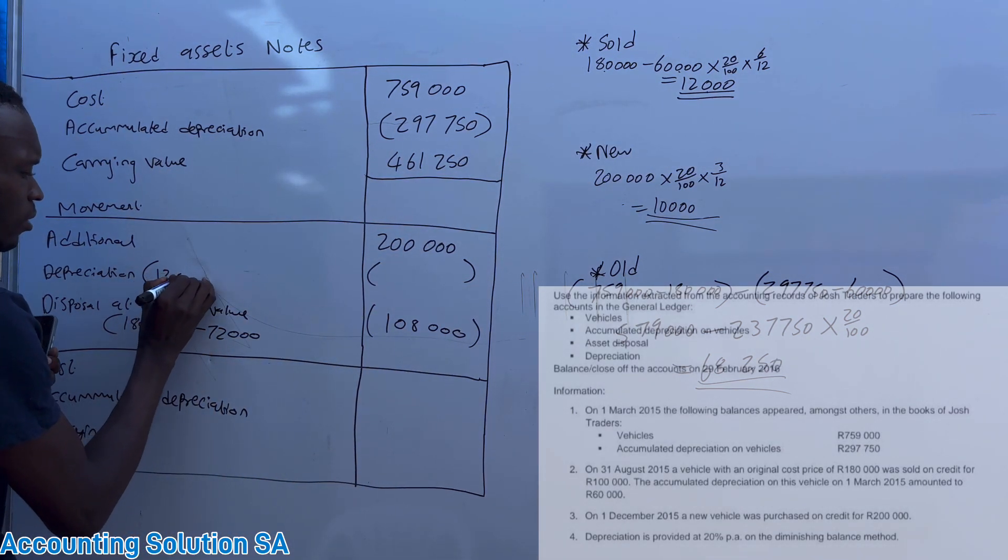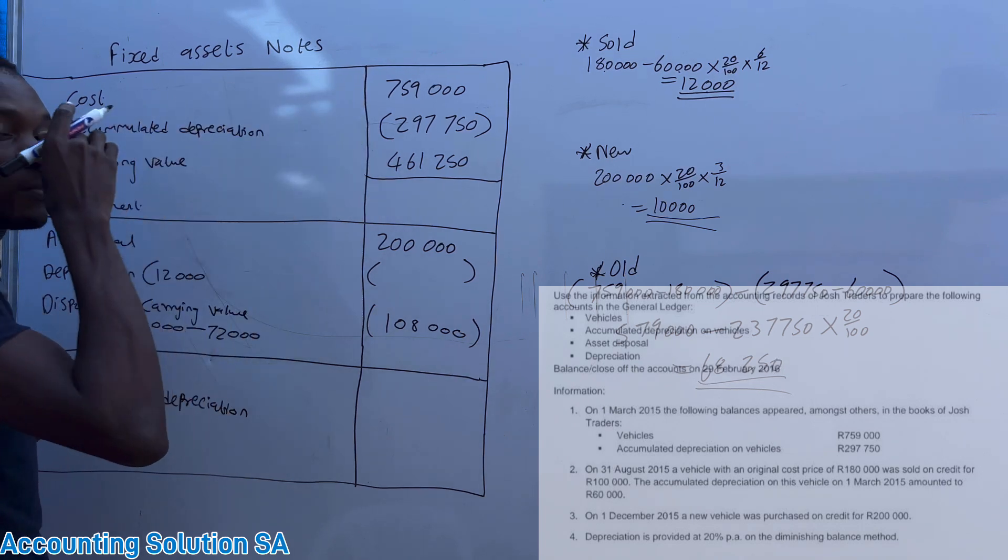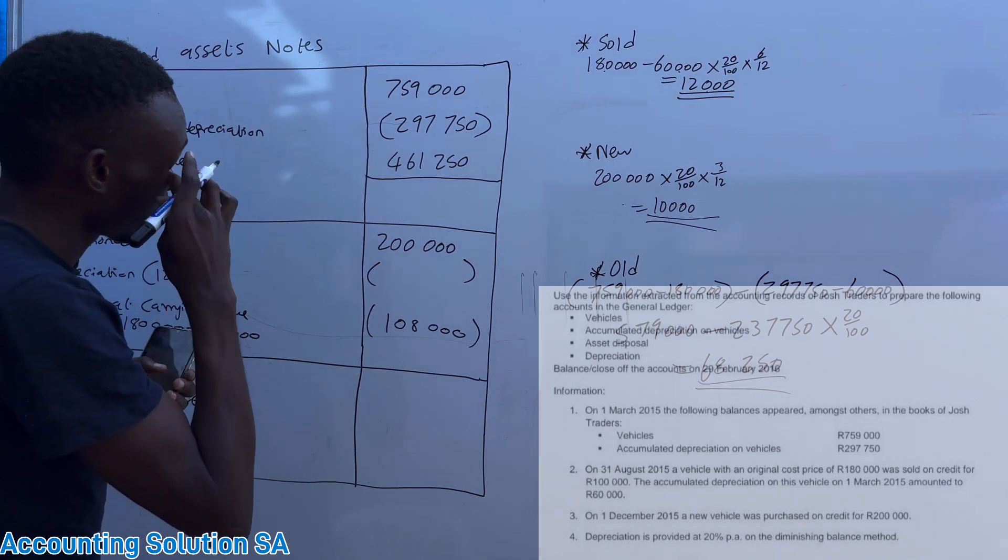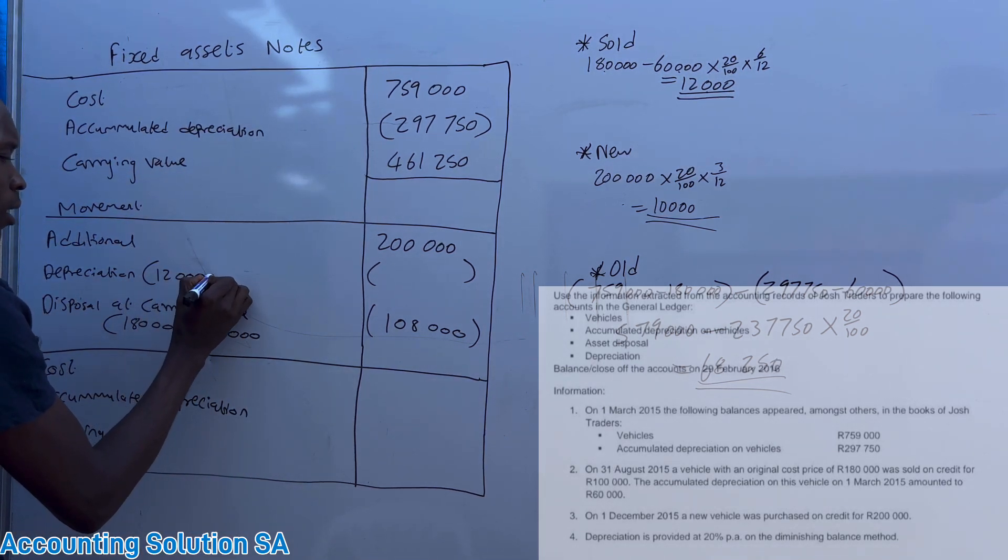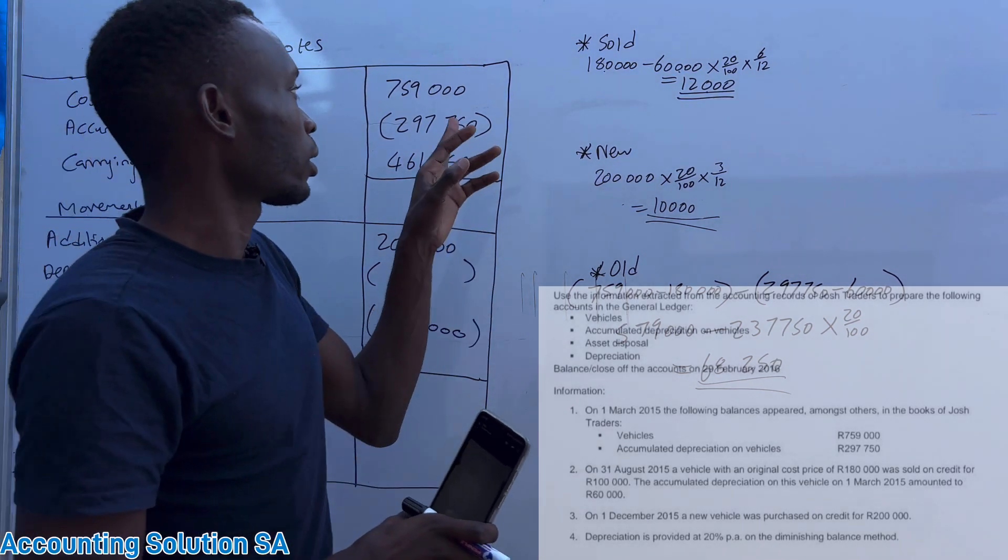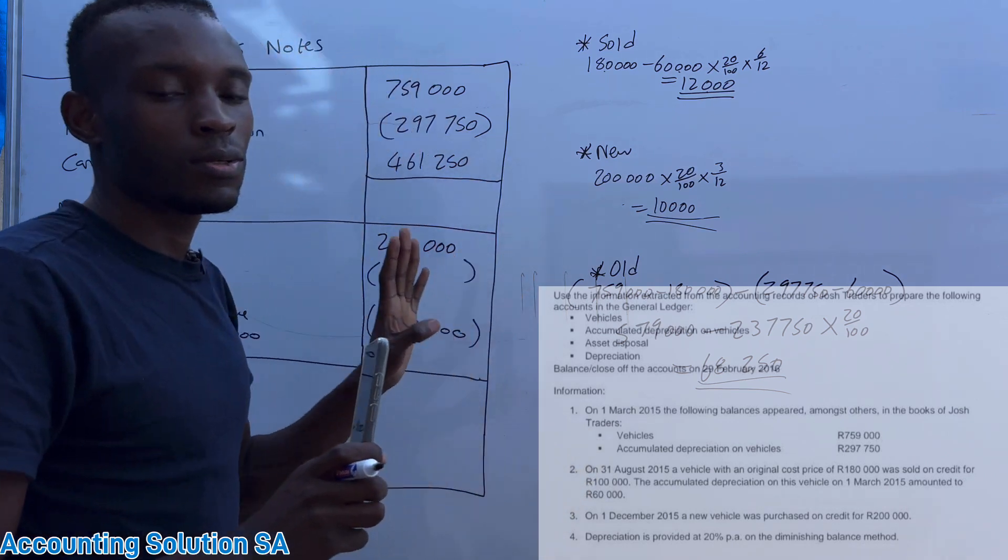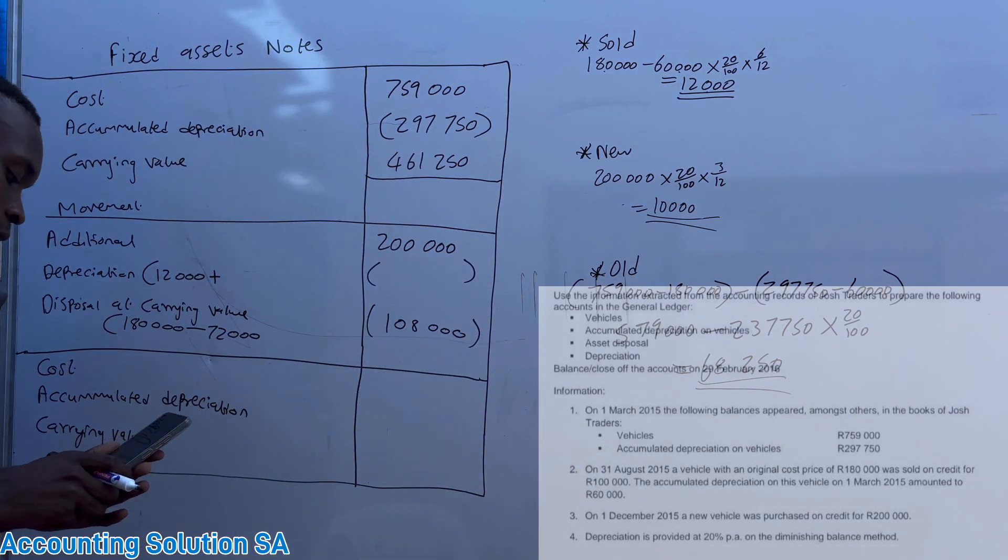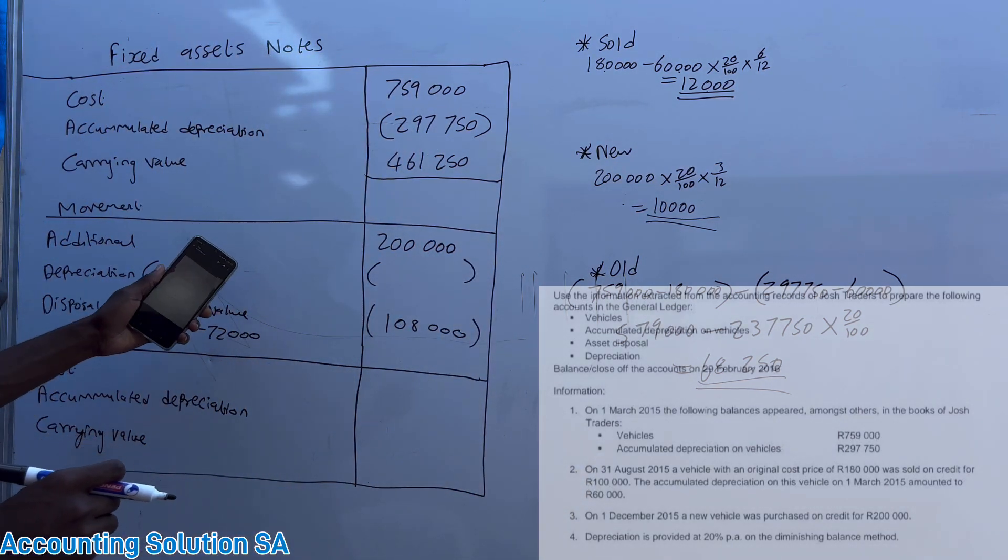And 12,000 we don't take 60,000 because 60,000 is old one guys, it's for previous year. We take 12,000 plus...